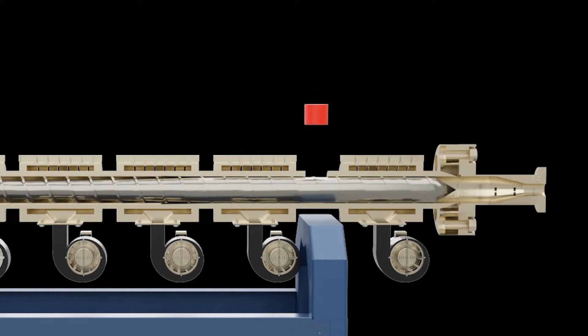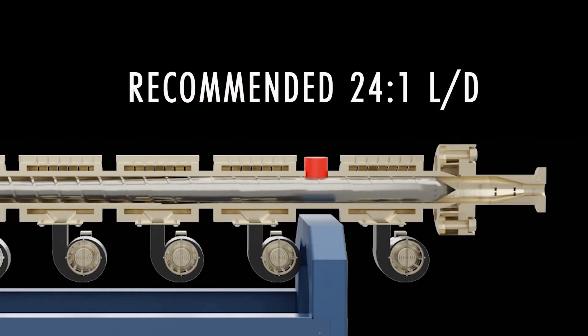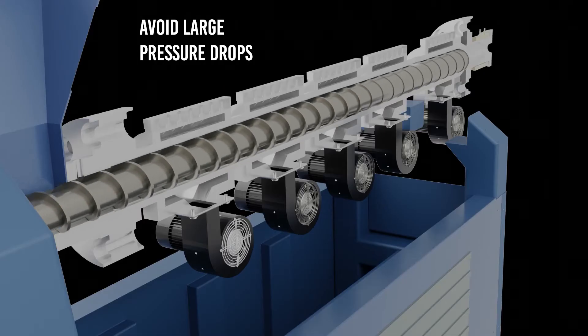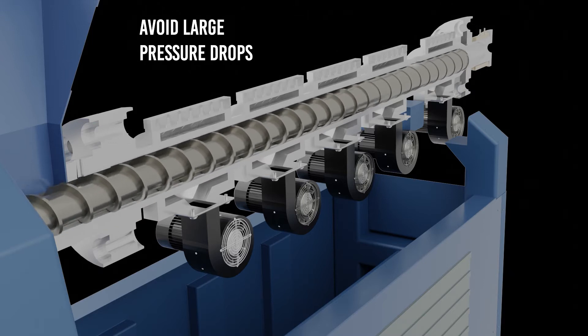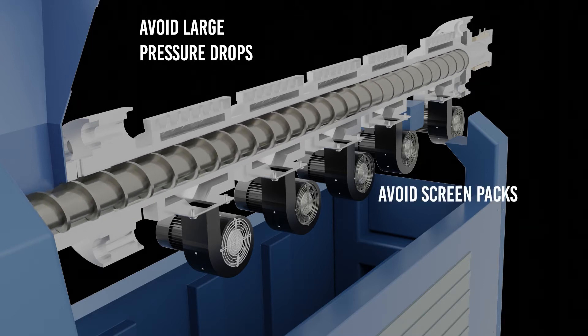Before you start, you want to ensure that all vent ports are plugged. A minimum of 24 to 1 L over D is recommended for any foam process. Additionally, you want to avoid screw designs that have large pressure drops across them and avoid the use of screen packs.